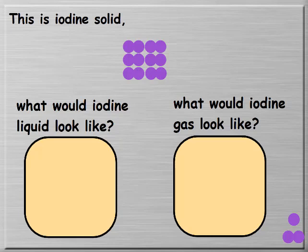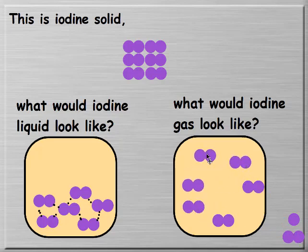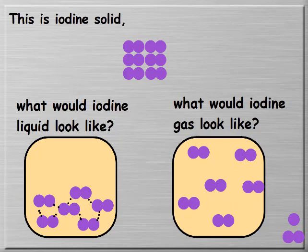For iodine as a solid, liquid, and gas: iodine liquid still has some attractions because it's a liquid, with just some space between molecules. Iodine gas is also diatomic because we're not breaking any bonds when it turns into a gas—we're just breaking the attractions. So it's spread out and fills the container. Iodine remains I₂ because the covalent bond within the molecule is preserved.